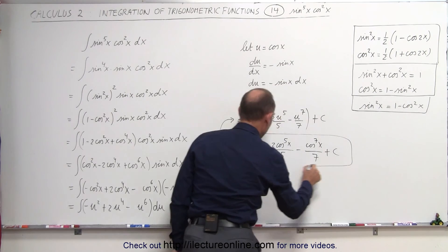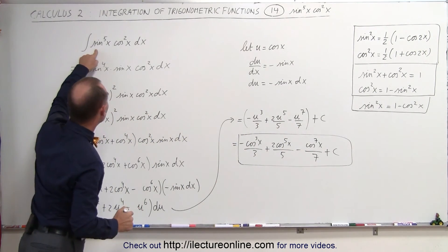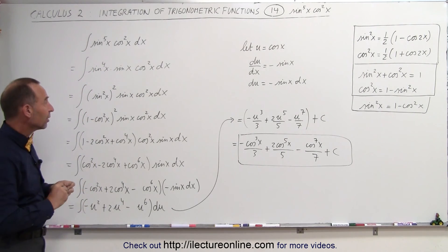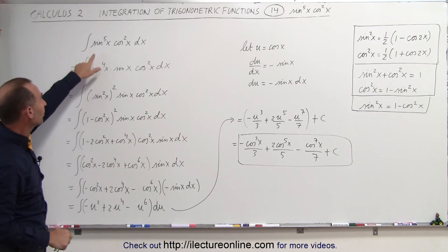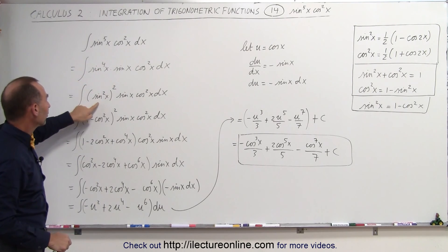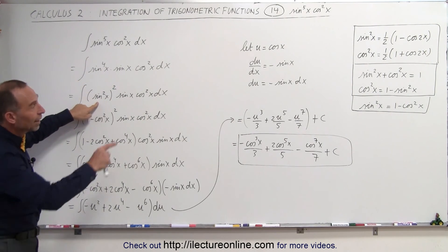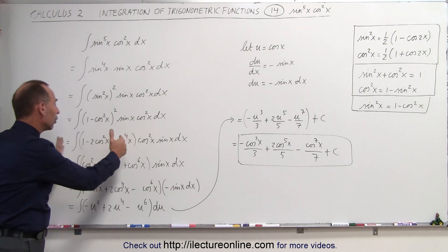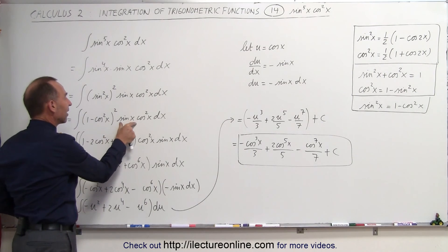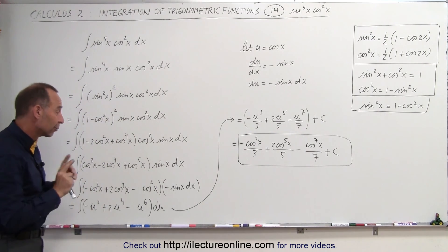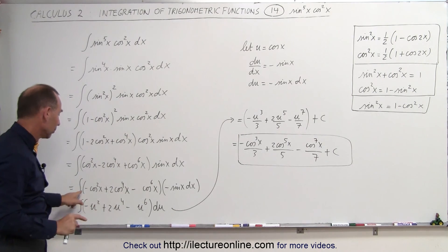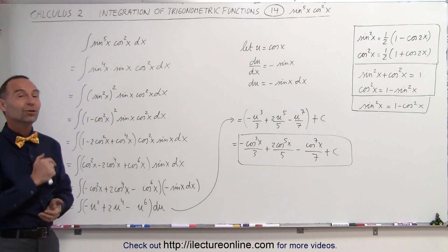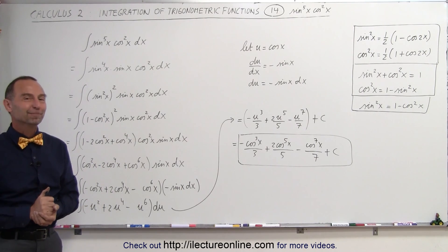And that is the integral of sine to the fifth of x times cosine squared of x dx. Without that trick — without realizing we can write sine to the fifth of x that way, then write it as the square of sine squared of x, then replace sine squared of x with 1 minus cosine squared of x, combine all the cosine terms, and recognize that sine of x provides the differential for cosine of x — we'd be stuck. Once you know the trick, it's not that hard. And that's how we do it.